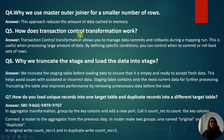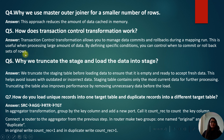How does the Transaction Control Transformation work? The TCT transformation allows you to manage data commit and rollback during a mapping run. This is useful when processing large amounts of data — by defining specific conditions, you can control when to commit or rollback a set of rules.